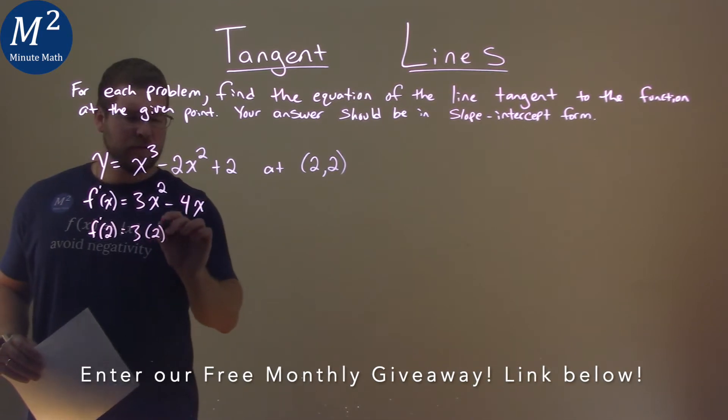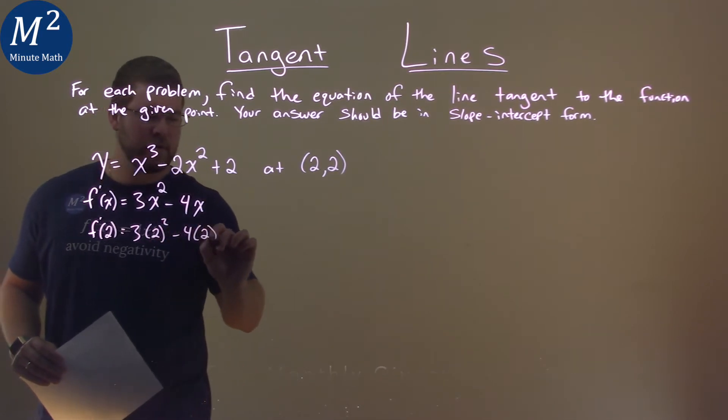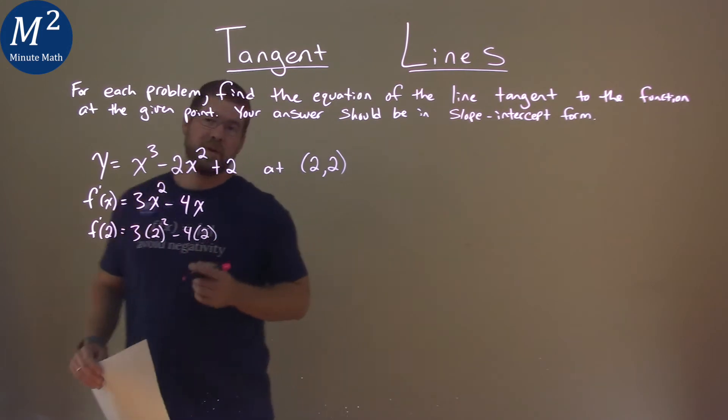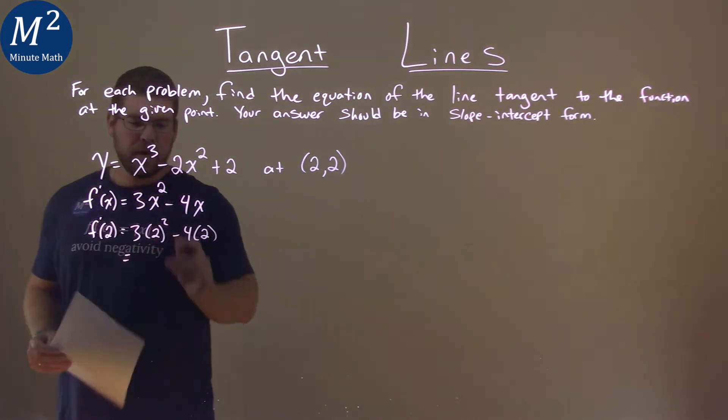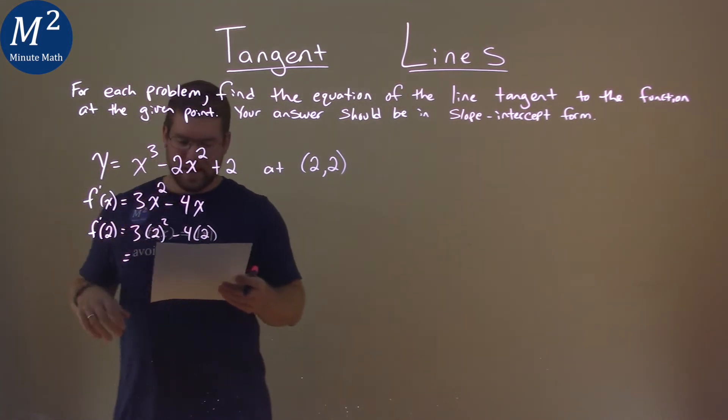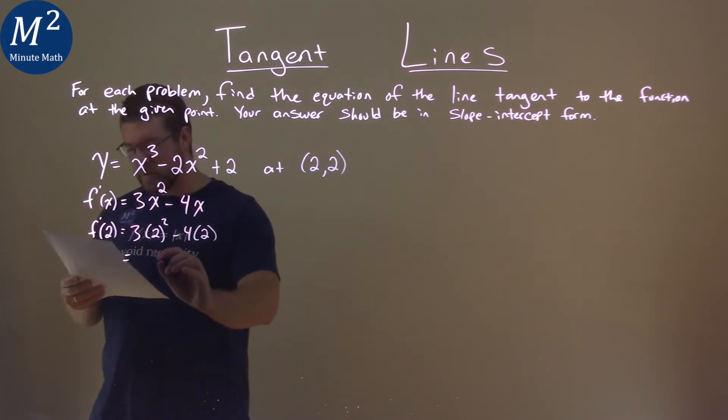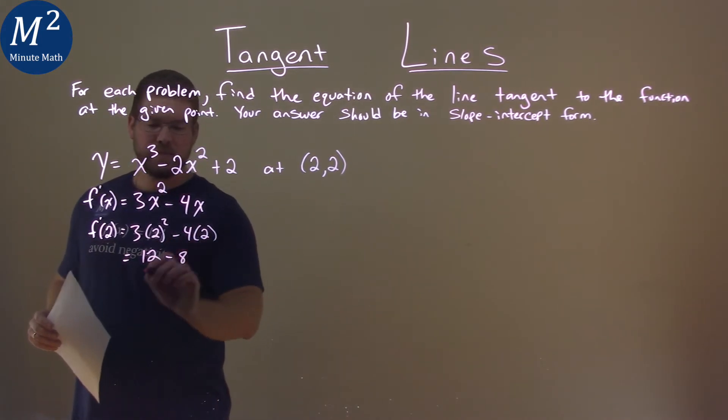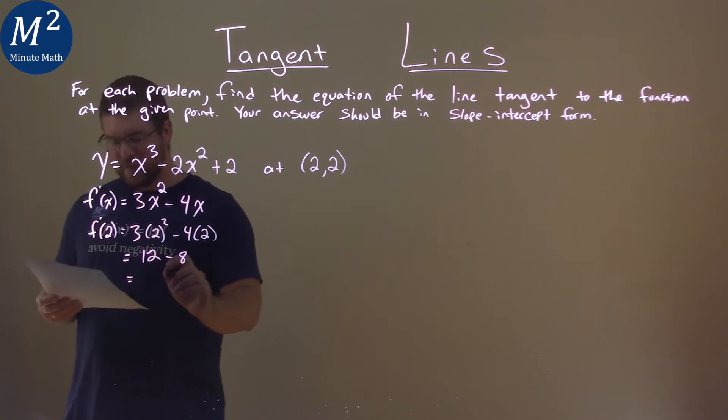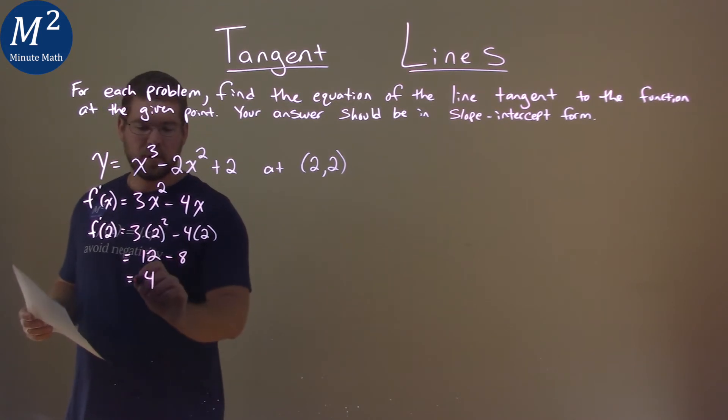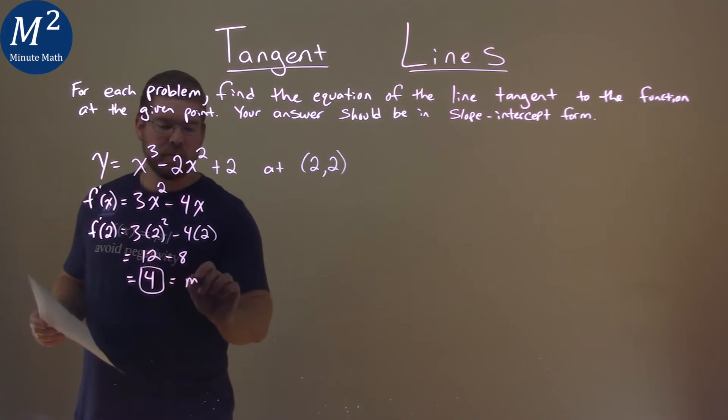3 times 2 squared minus 4 times 2. From here, we're solving, right? 2 squared is 4 times 3, comes out to be 12, and 4 times 2 is 8. 12 minus 8 gives us 4, and so our derivative here at 2 is 4, which is equal to our slope.